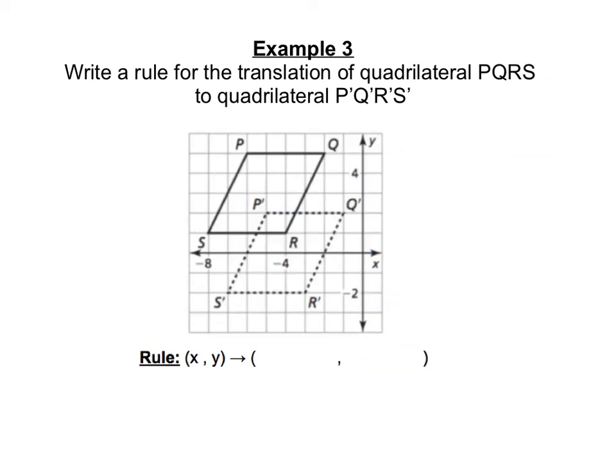Here's one more example, and we're going to write the rule for the translation of quadrilateral PQRS to quadrilateral P'Q'R'S'. Just like before, I can pick any point in the pre-image, so any of the capital letters. Let me choose maybe S this time.